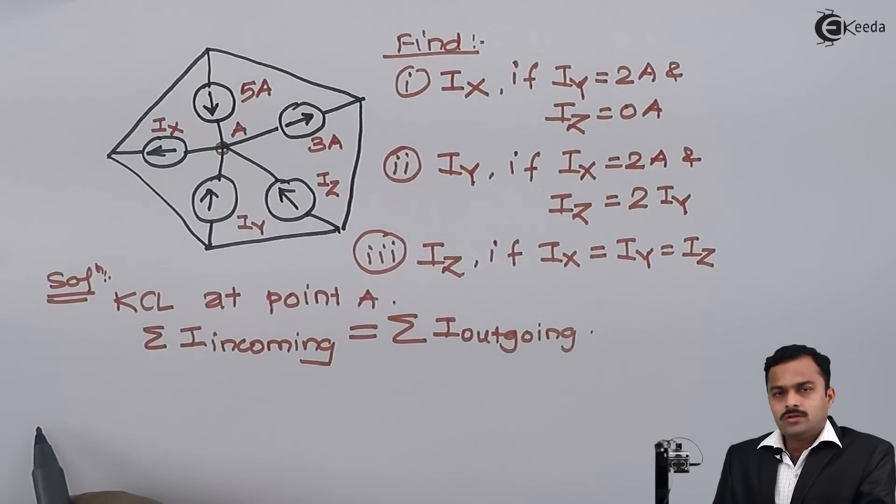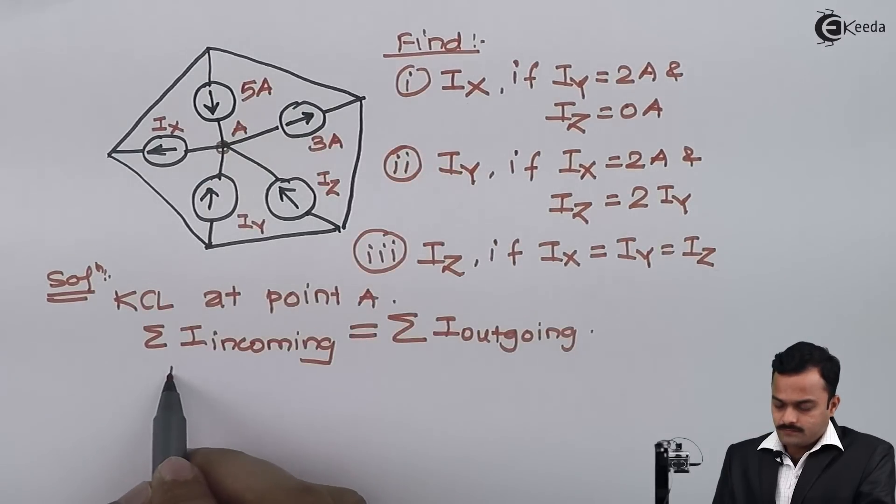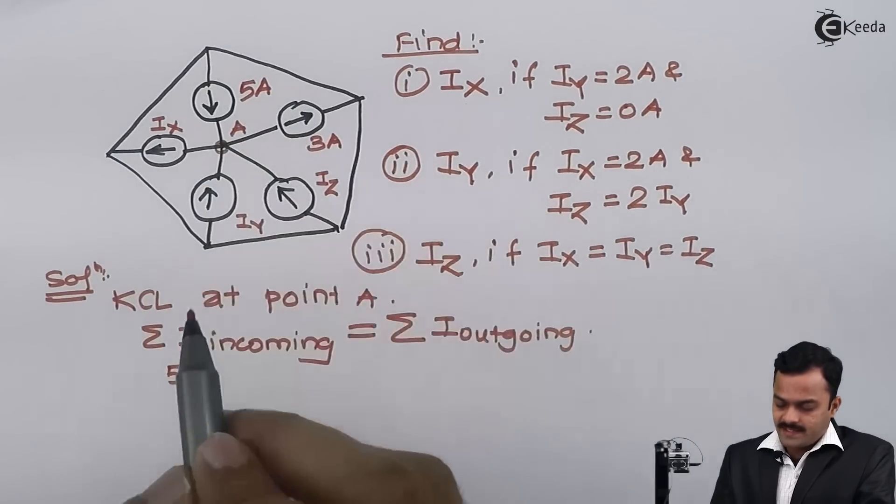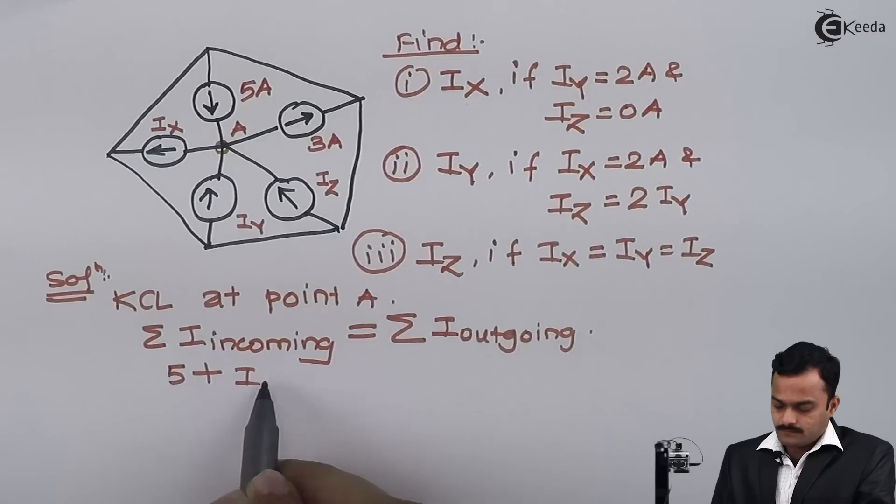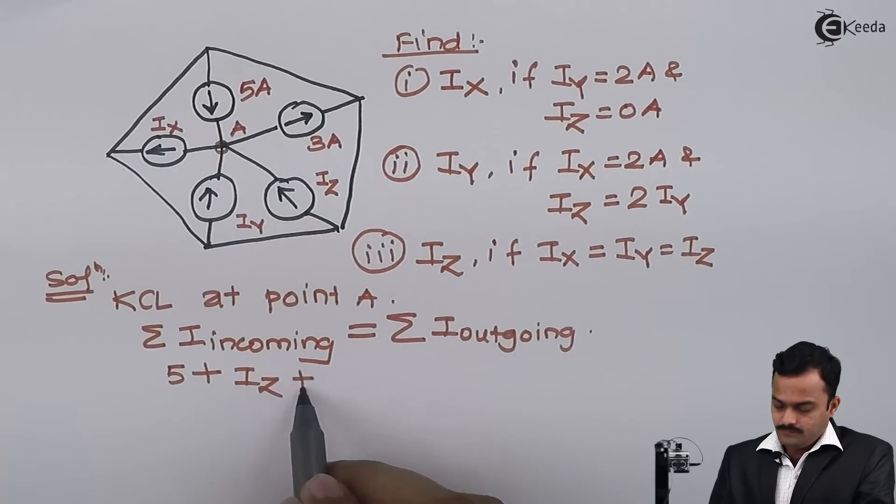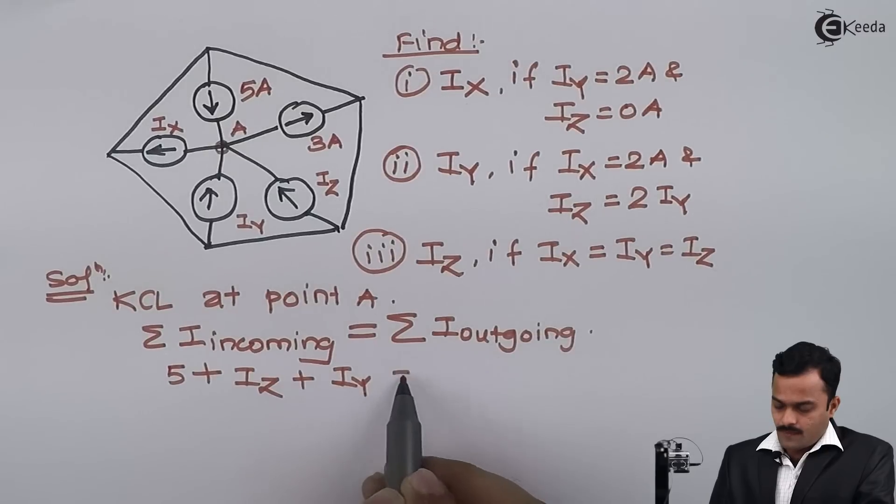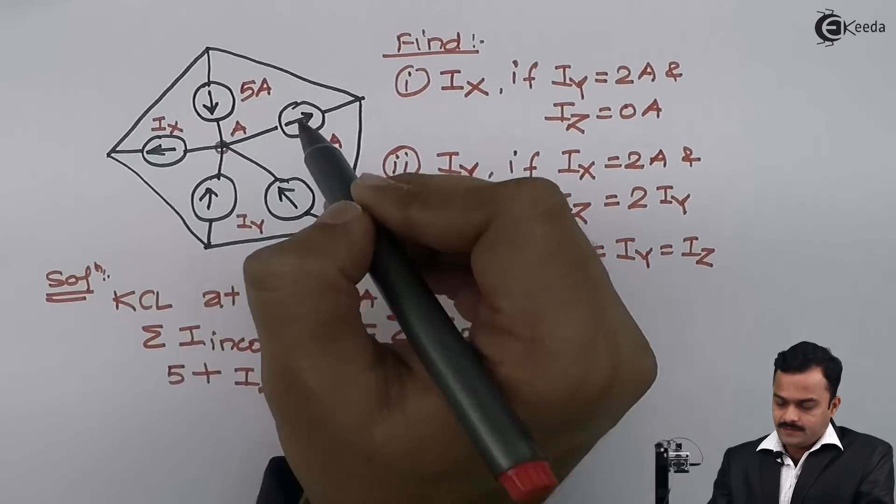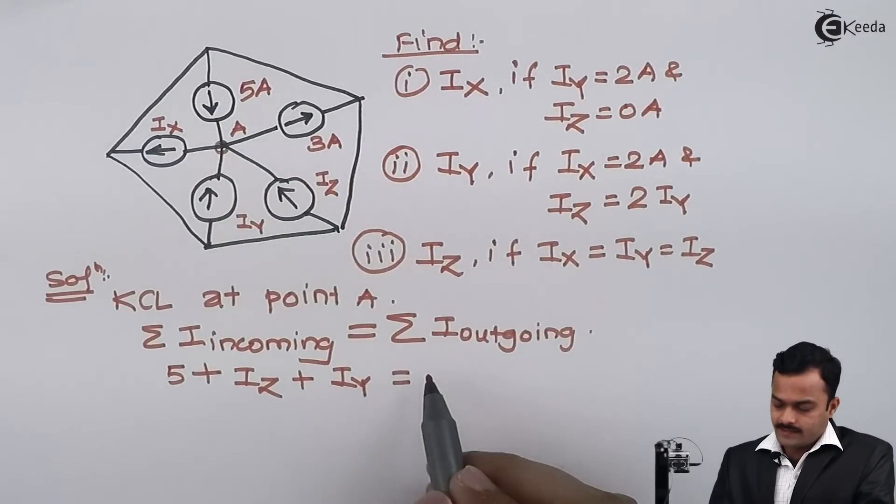So incoming currents over here are 5 ampere, iz, and iy, and outgoing currents are 3 ampere and ix.